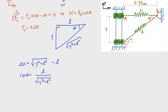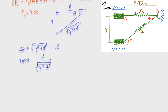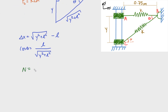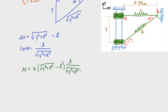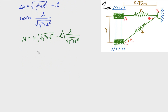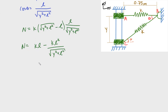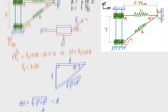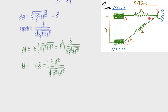Now we can plug into the normal force equation. N = fs·cosθ = k·(√(y² + l²) − l) · (l / √(y² + l²)). Distributing these variables and then substituting y = 1, l = 0.75, and k = 3, we can compute the result.